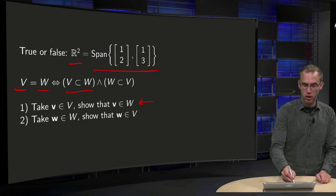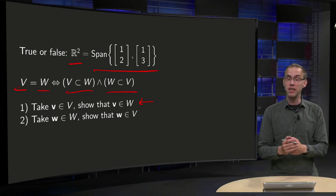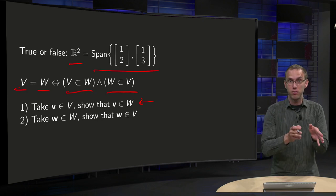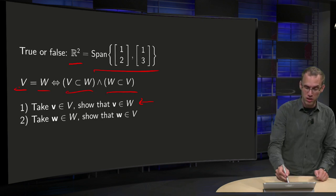And you also need to show that W is a subset of V. So that means every element of W is also in V, that's what it says over here.